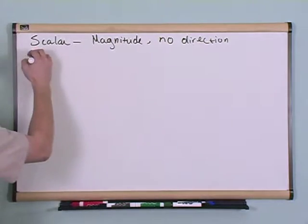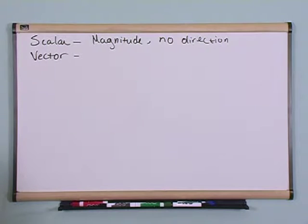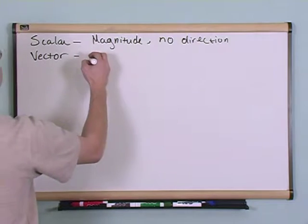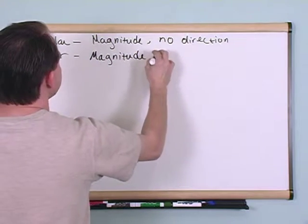A vector is kind of like a scalar except it has magnitude and direction.